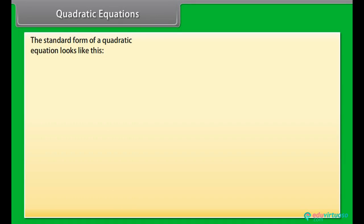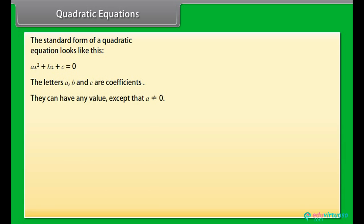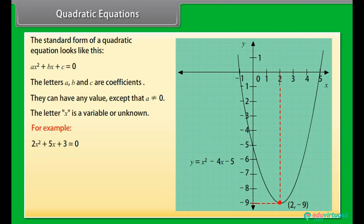What are the quadratic equations? The standard form of a quadratic equation looks like this: AX squared plus BX plus C is equal to 0. The letters A, B and C are coefficients. They can have any value except that A can't be 0. The letter X is a variable or unknown. For example: 2X squared plus 5X plus 3 is equal to 0. In this equation, A is equal to 2, B is equal to 5, C is equal to 3.